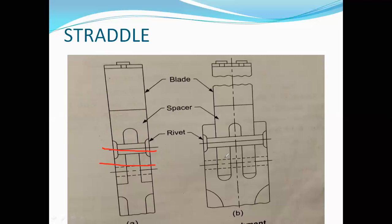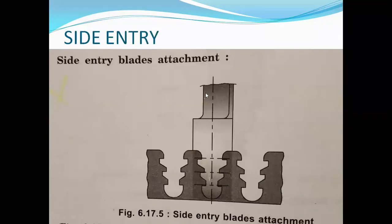Next is the side entry blade attachment. This attachment is used for high peripheral speeds. The rotor carries a comparatively heavy rim in which closely spaced slots are cut, one slot per blade.